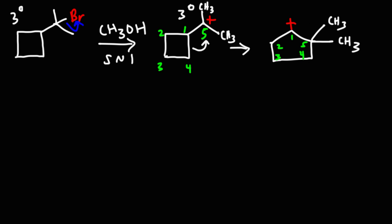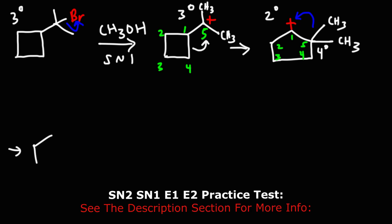We have a secondary carbocation next to a quaternary carbon, so we're not going to get a hydride shift — instead we're going to get a methyl shift. This methyl group moves toward the carbocation, and the carbon that lost that bond is now going to have the positive charge, giving us a tertiary carbocation.